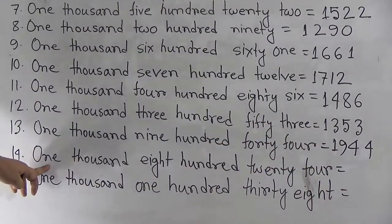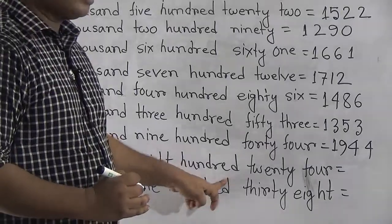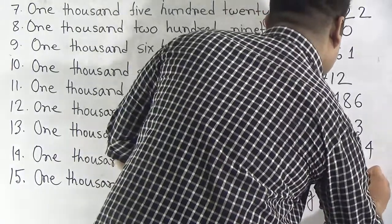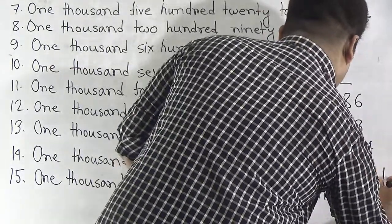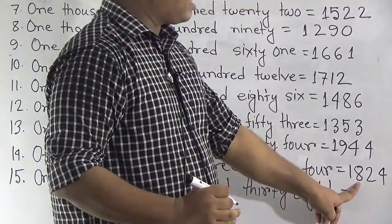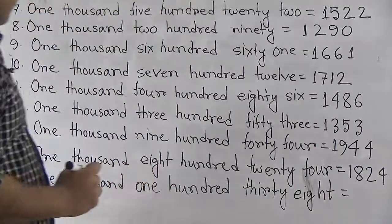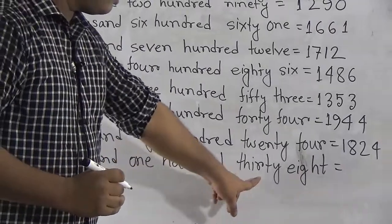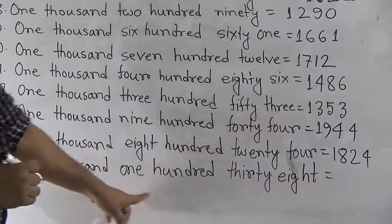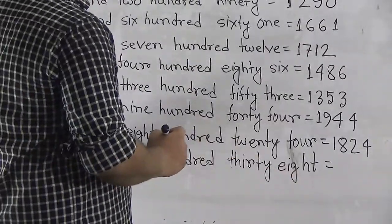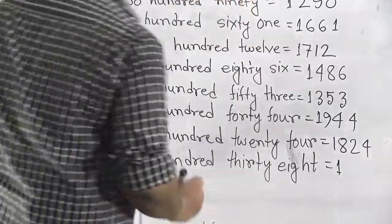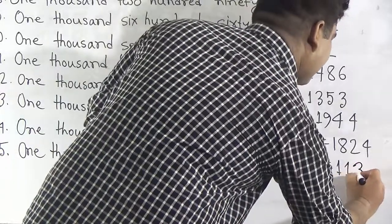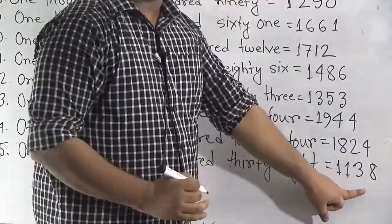Our next number is 1,824. Our next number is 1,138. For 1,000 we write 1, 100 means 1, and 38 means 3 and 8. So it is called 1,138.